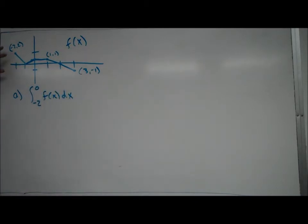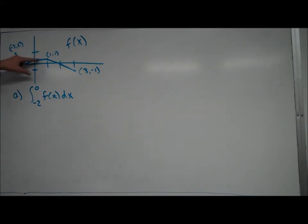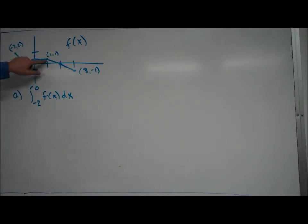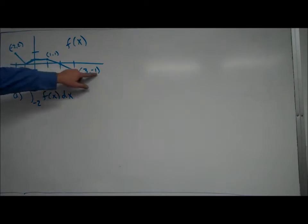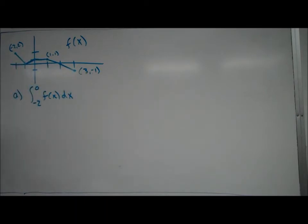Now, all these on here — this isn't perfectly drawn, I apologize — but all these are supposed to represent straight lines. So I have a straight line here, goes across horizontally for a little bit, and then comes back down. You can see this point right here is negative 2, 2. This point here is 1, 1. That point there is 3, negative 1. At all the other places, hopefully it's kind of clear what the points are.